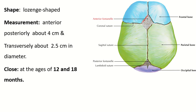The shape of the anterior fontanelle is lozenge-shaped. Its anterior-posterior diameter is 4 cm and its transverse diameter is 2.5 cm. It closes at the age of 12 to 18 months.